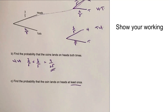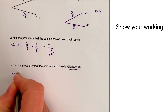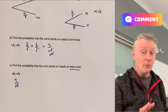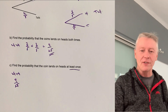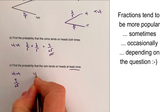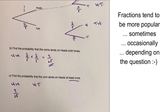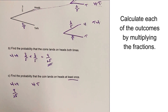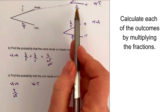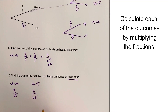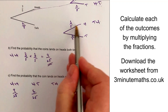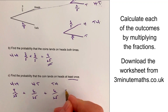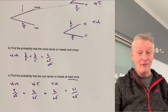We've already got heads-heads as 9 out of 25. For heads-tails, following that branch, it's 3 out of 5 multiplied by 2 out of 5, giving us 6 out of 25. Then tails-heads is 2 out of 5 multiplied by 3 out of 5, which also gives 6 out of 25. Adding all of those up we get 21 out of 25, and that's the answer to part C.